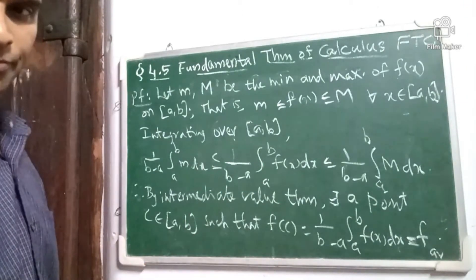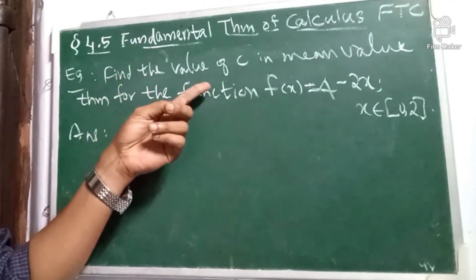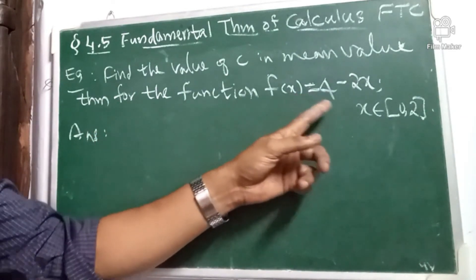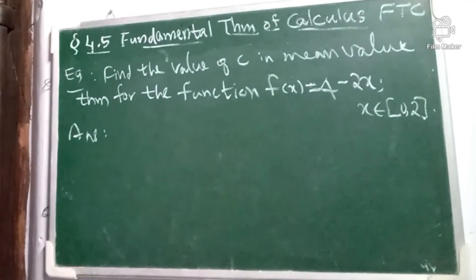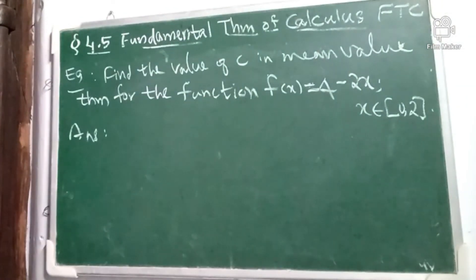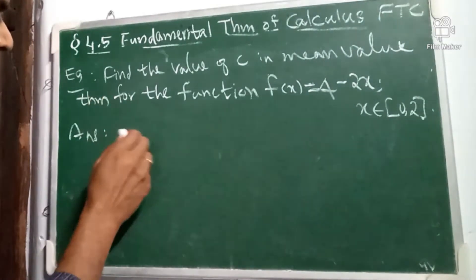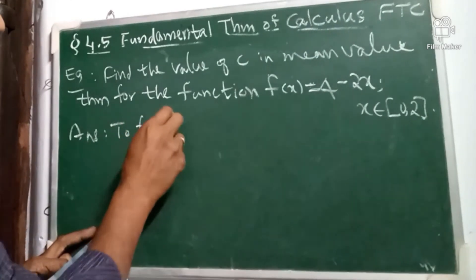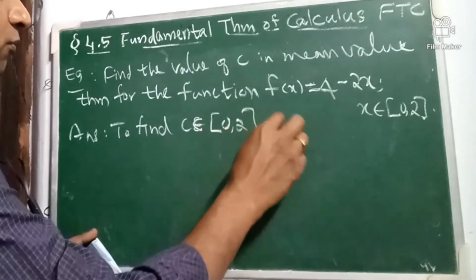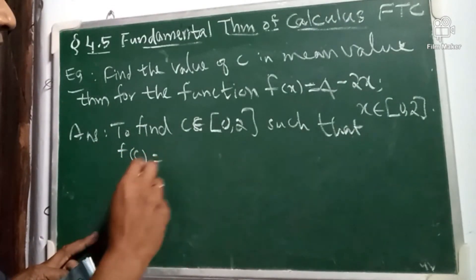So this is the proof. Let us do an example of the Mean Value Theorem. Find the value of c in the Mean Value Theorem for the function f(x) equals 4 minus 2x, where x belongs to [0, 2]. We want to find c in the interval [0, 2] such that f(c) equals f average.